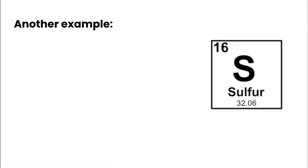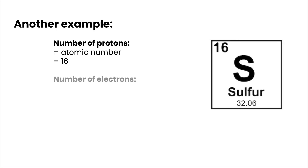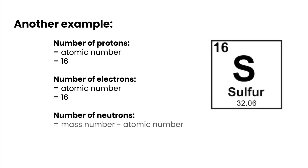Let's look at a couple more examples. For sulfur, chemical symbol S, the atomic number is 16 and the atomic mass is 32.06. Number of protons equals the atomic number: 16. Number of electrons in a neutral atom also equals the atomic number: 16. Number of neutrons equals mass number minus atomic number: 32 minus 16, which gives us 16 neutrons. So sulfur has 16 protons, 16 electrons, and 16 neutrons.